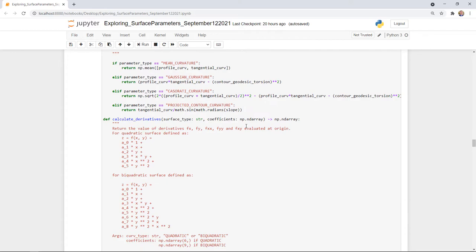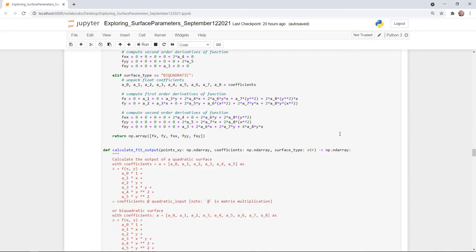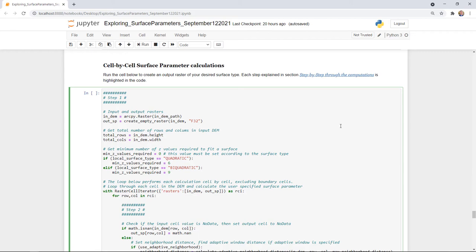For example, where we're deriving the curvature types, this being the basic trio, and here being the combinatorials, doing the quadratic and bi-quadratic surfaces, calculating surface normals, doing the geodesics, handling of no data, all that to get down to an easier explanation of what we do on a step-by-step basis for each cell as we work through the data.